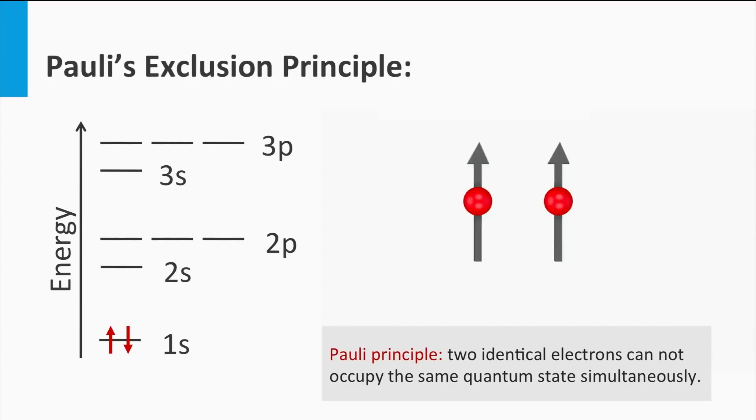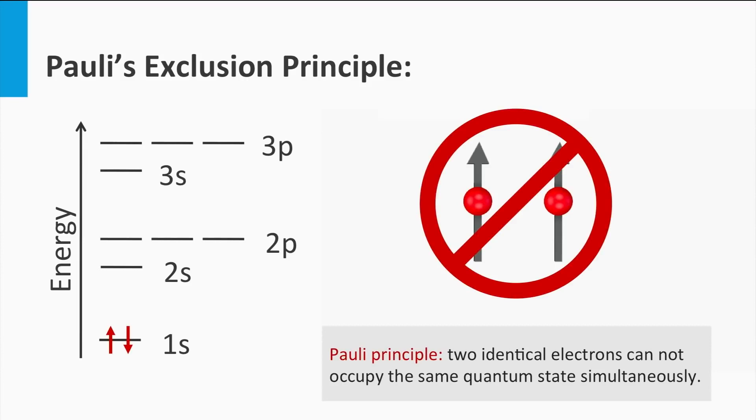Now let's consider two electrons which both are in a state with their spins up. Can these electrons both fill the same energy state x? The answer is no, as both electrons have the same spin and they have the same energy. This means we have two identical electrons that occupy the same quantum state and this violates Pauli's exclusion principle.